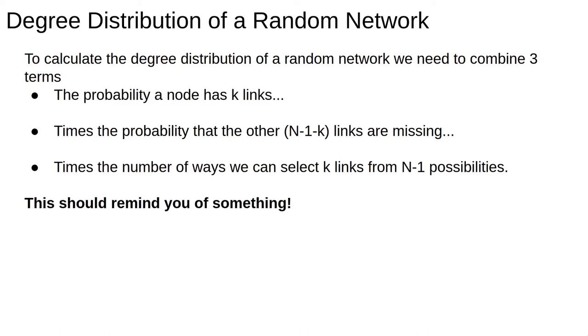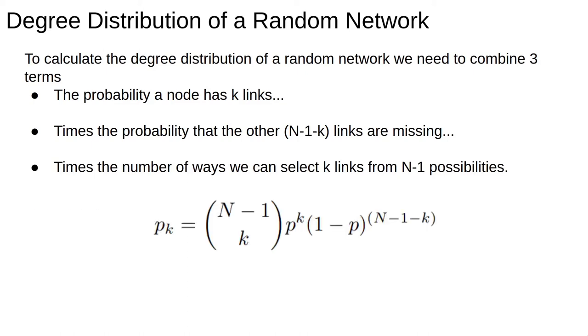This should remind you of something that we have already studied. The degree distribution of a random network is given by the binomial distribution. Pause here, get a piece of paper, draw some nodes and edges on it, and make sure you understand where each term in this formula comes from.